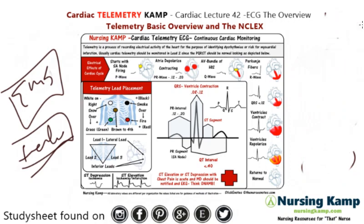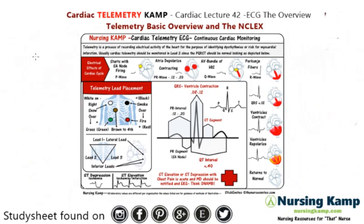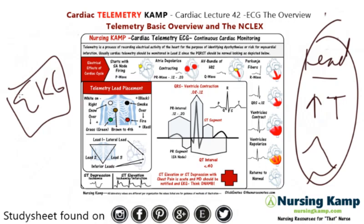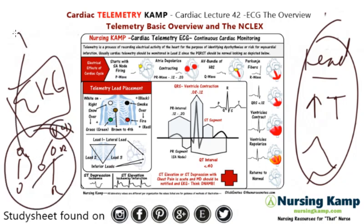If you have a patient on telemetry, you're monitoring for ST elevations and ST depressions. Make sure they're in lead two. If you see any elevations, peak T waves, or ST depressions, that's acute and you're going to get an EKG. There is a difference between telemetry and an EKG — telemetry is monitoring the patient over time. Lead placement: white on right, snow over grass, smoke over fire, black over red, and brown to ground in the fourth intercostal space. That's a brief overview of ECG telemetry. My next lecture will cover the EKG.